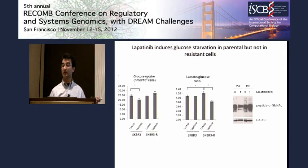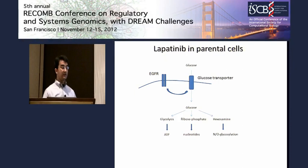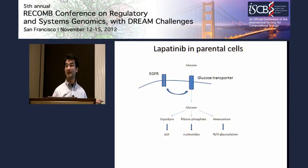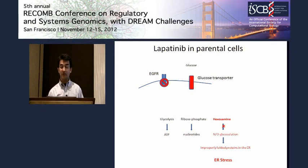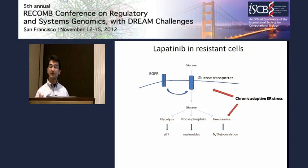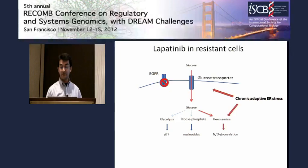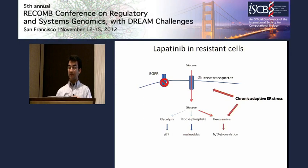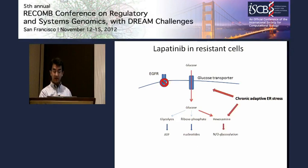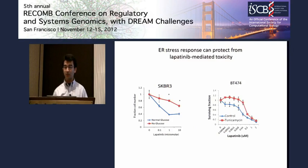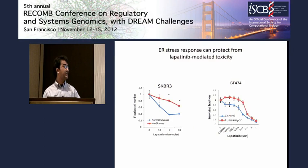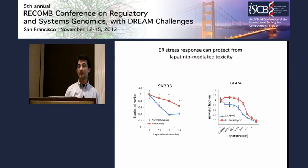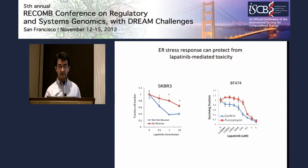The model we extract from these analyses is that EGFR/HER2 signaling is required for glucose import in parental cells. When you inhibit it with lapatinib, there is significant glucose starvation, inhibition of the hexosamine pathway, and resulting ER stress. But in resistant cells, there is chronic activation of the adaptive ER stress response, which ensures constitutive glucose import and hexosamine pathway activity even during lapatinib treatment. We also tested if imposing adaptive ER stress on parental cells can protect them from lapatinib, and indeed, sublethal ER stress-inducing conditions such as glucose deprivation or tunicamycin can partially protect cells from lapatinib.